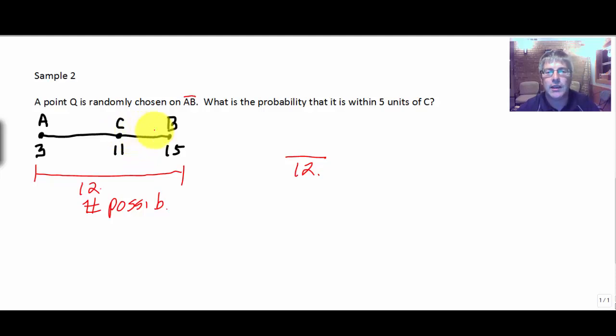Well, if it's to the right of C, we only have four units. We can't go any further than four units, 11 to 15 is four units, so there would be four units there. Then we need to go five units from C, right? So we need five more units, which would take us, 11 minus five is six. So 11 minus five is six. So between six and 15, that's a total of, total possibility of nine units.